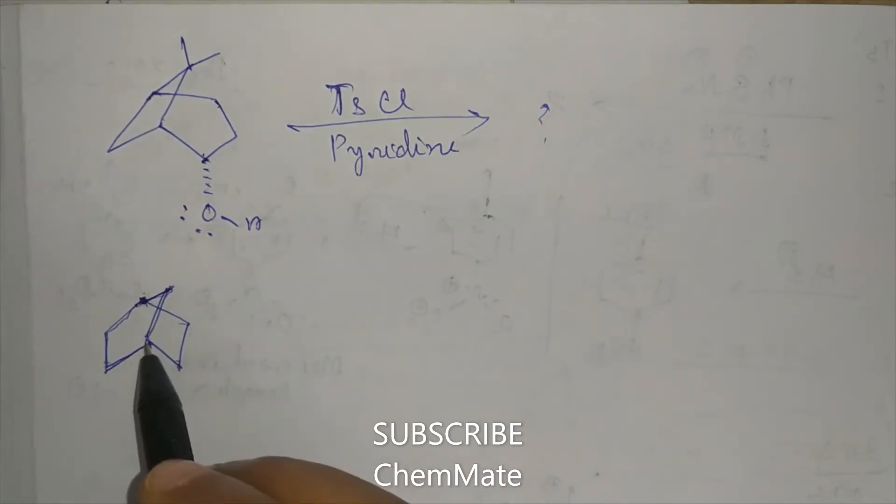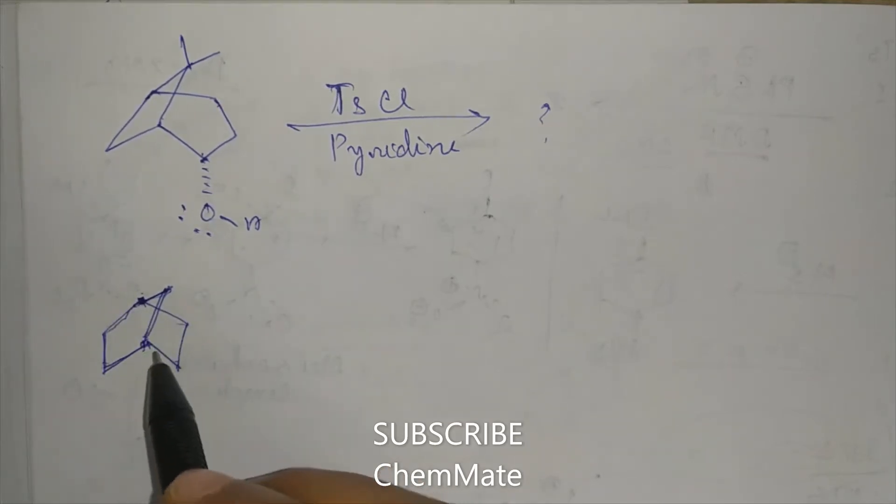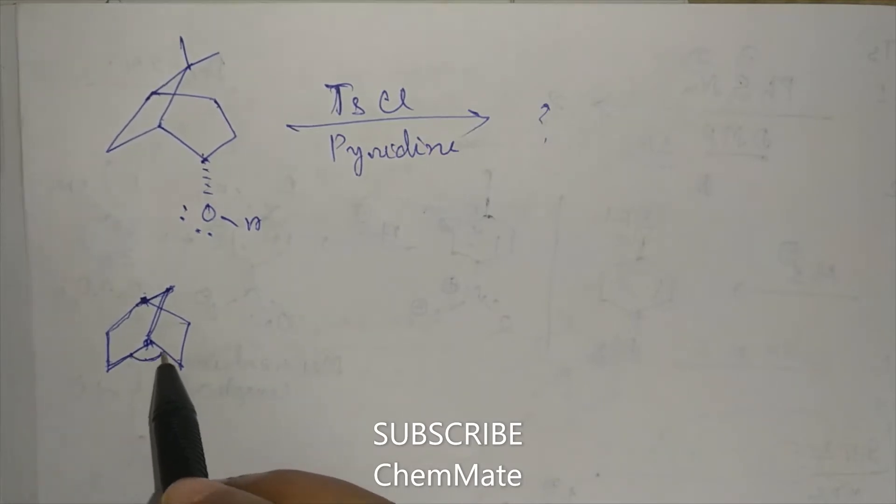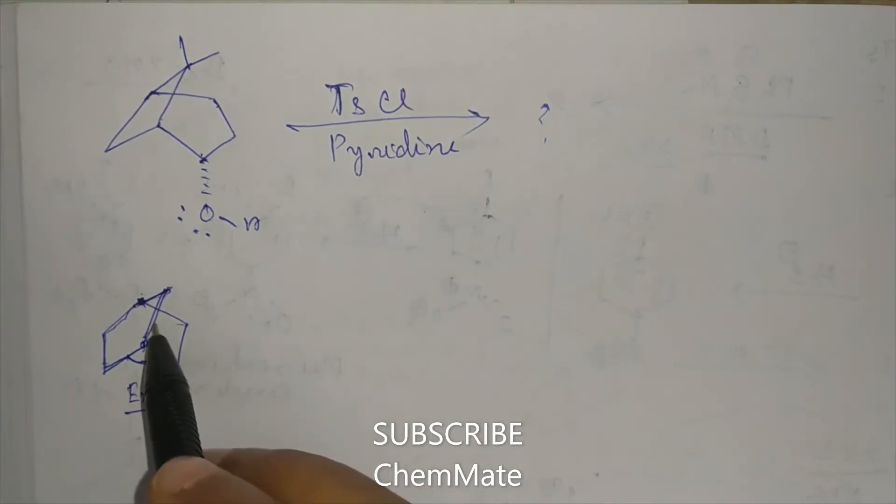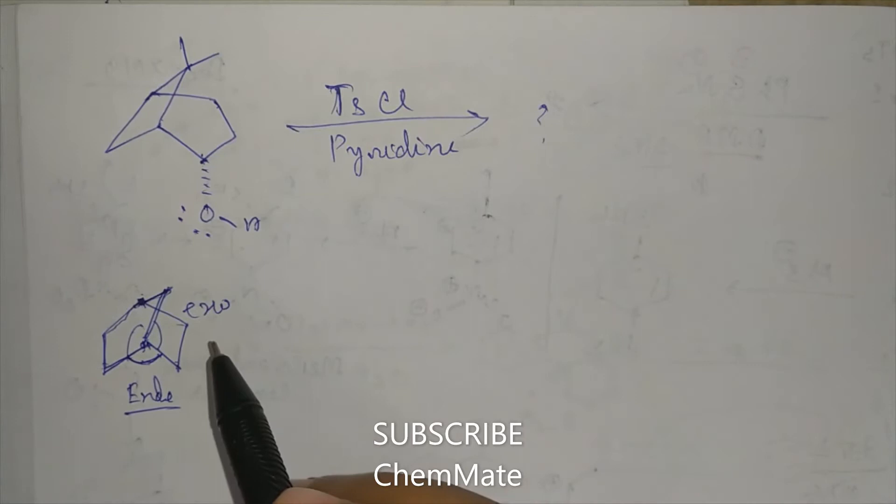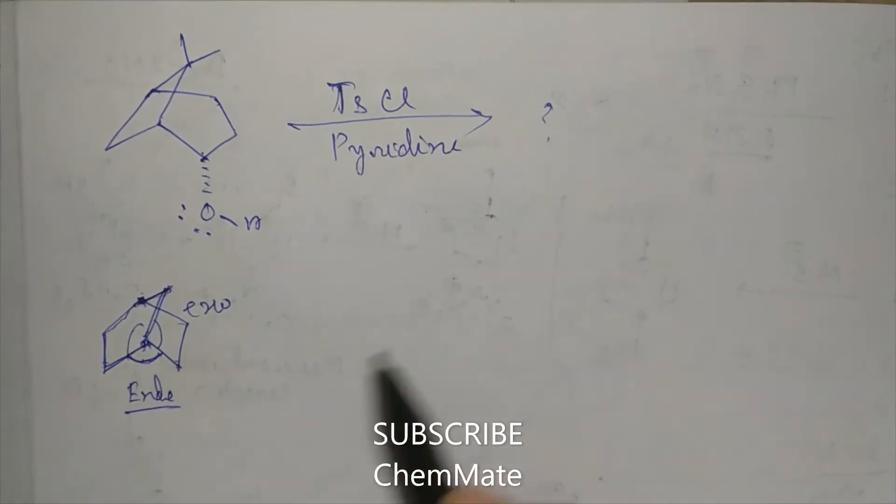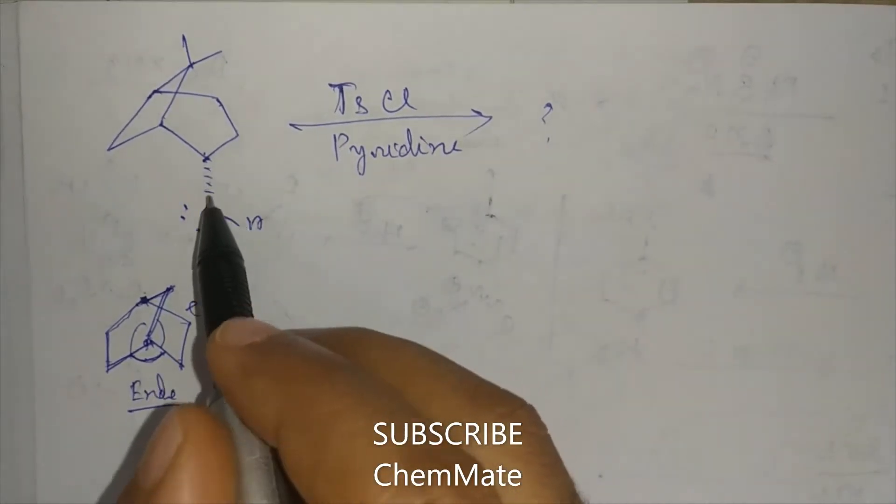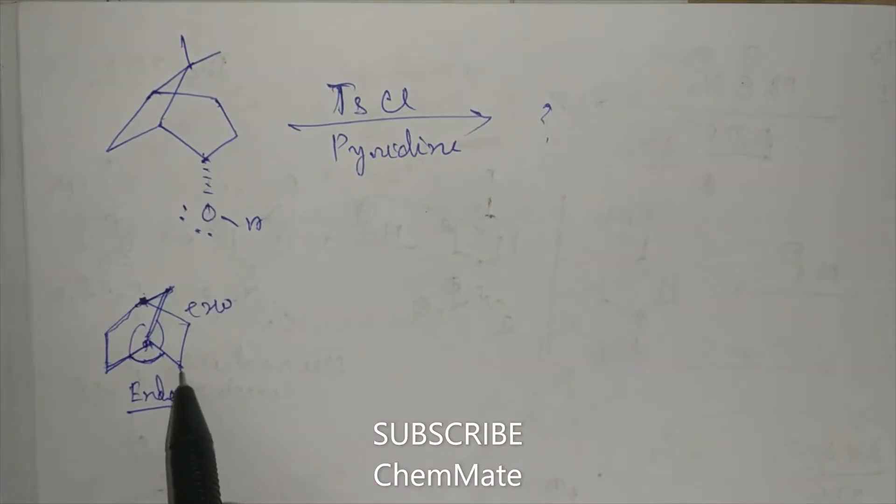So here, this face is called endo side and these two are called exo side. Now that means here the OH group is below, so the OH is below, so this is an endo side.